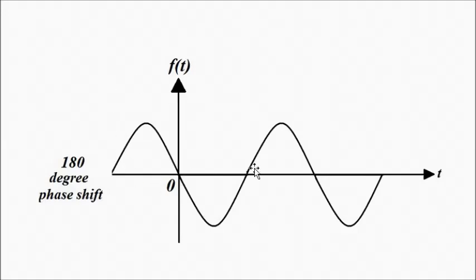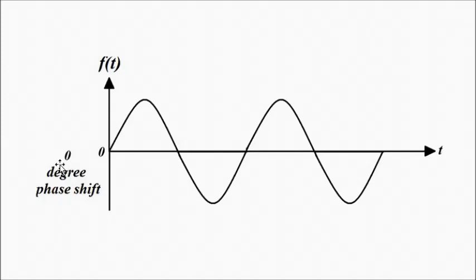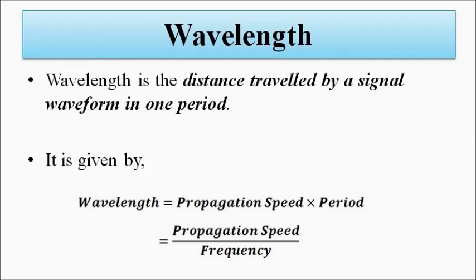If one complete oscillation is missing, that represents a 360-degree phase shift, which is the same as a 0-degree phase shift. Phase is very important in circuit analysis, in communication systems, and in data communication, because we are communicating signals from one point to another and various factors come into play. This covers the concept of phase shift and phase difference.